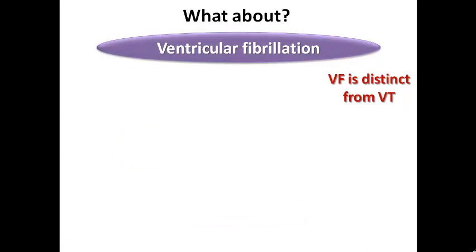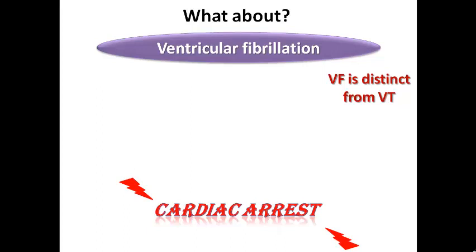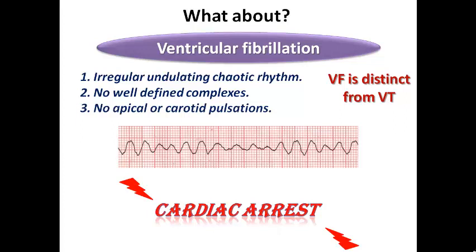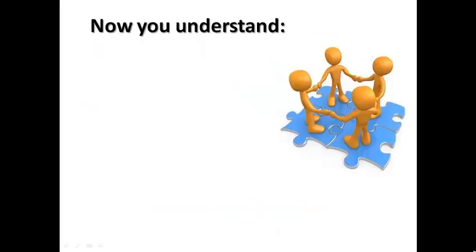Ventricular fibrillation is the other shockable rhythm causing cardiac arrest. VF is characterized by irregular, undulating, chaotic rhythm with absence of any organized QRS complexes on the ECG strip — no apical or carotid pulsation. The patient is in cardiac arrest requiring immediate chest compressions and defibrillation with DC shock. Ventricular fibrillation is completely distinct from VT.